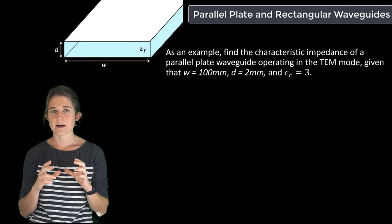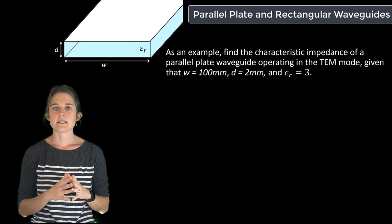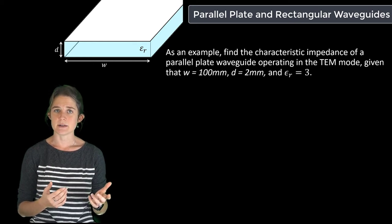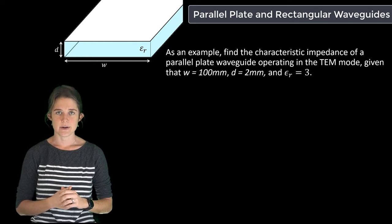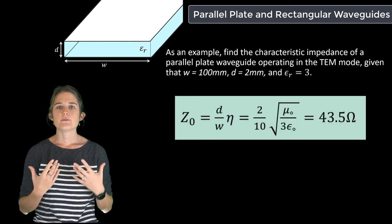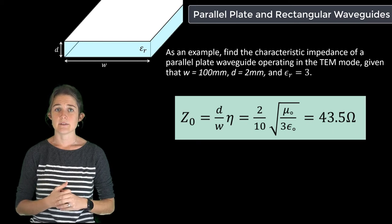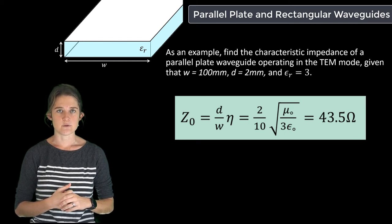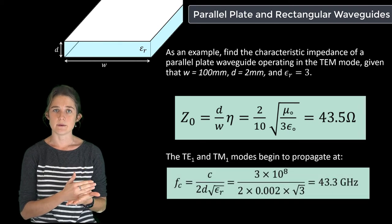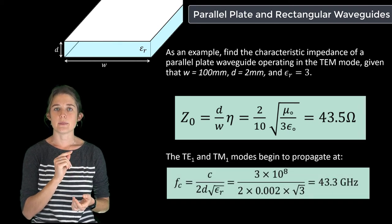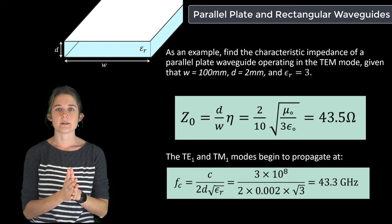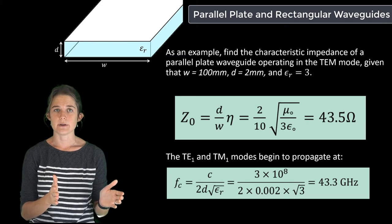As an example, suppose you wanted to find the characteristic impedance of a parallel plate waveguide operating in the TEM mode, given that w is 100 millimeters, d is 2 millimeters, and epsilon r is 3. Plugging these values into the equation, the characteristic impedance of the line is 43.5 ohms. Also, the cutoff frequency of the TE1 and TM1 modes is 43.3 gigahertz, so this parallel plate guide will be single mode at all frequencies below 43.3 gigahertz.